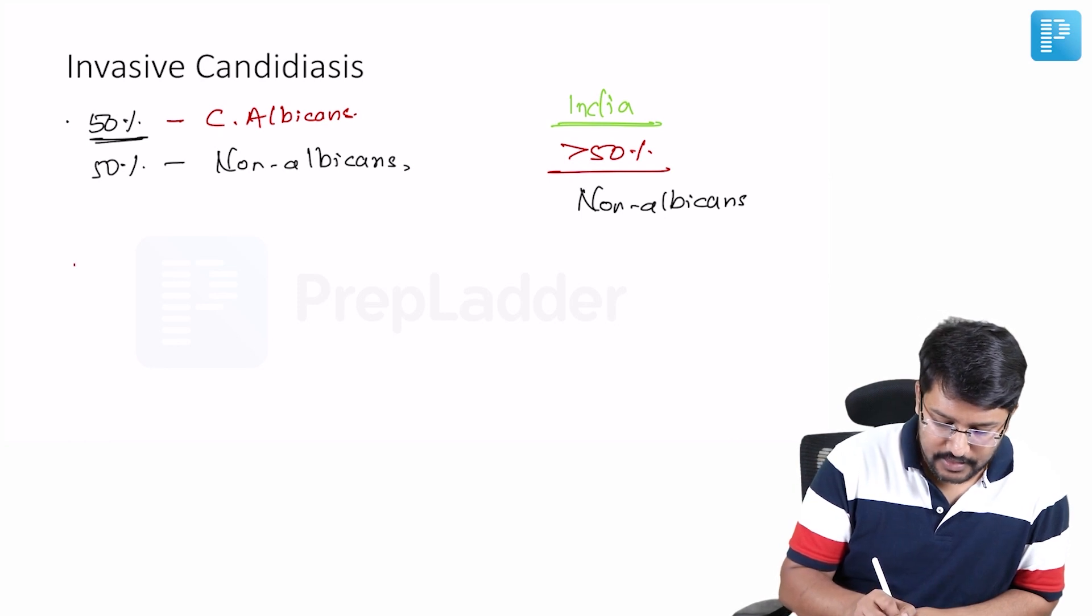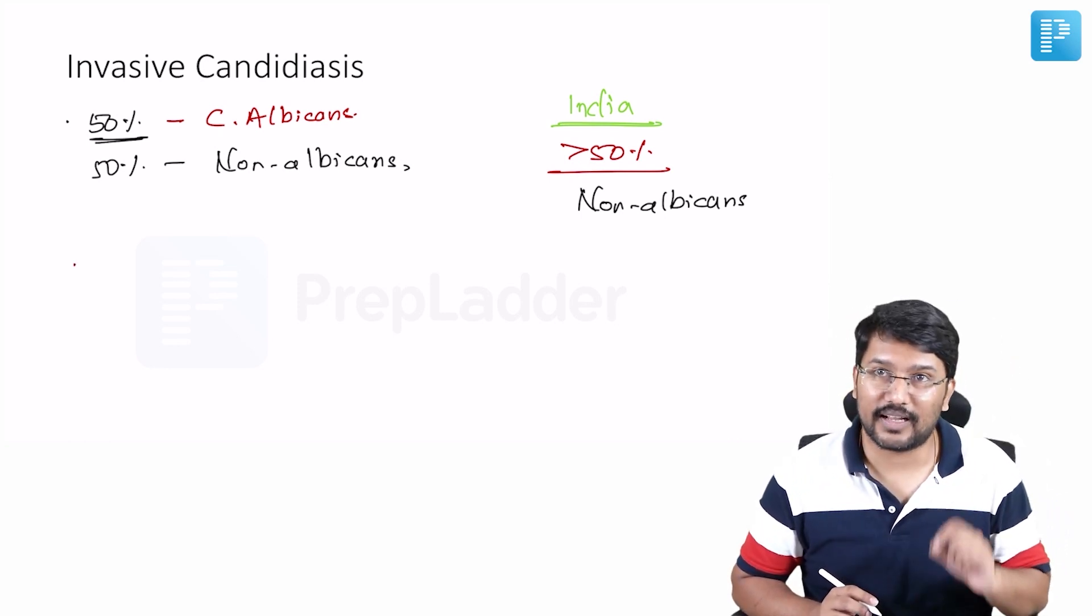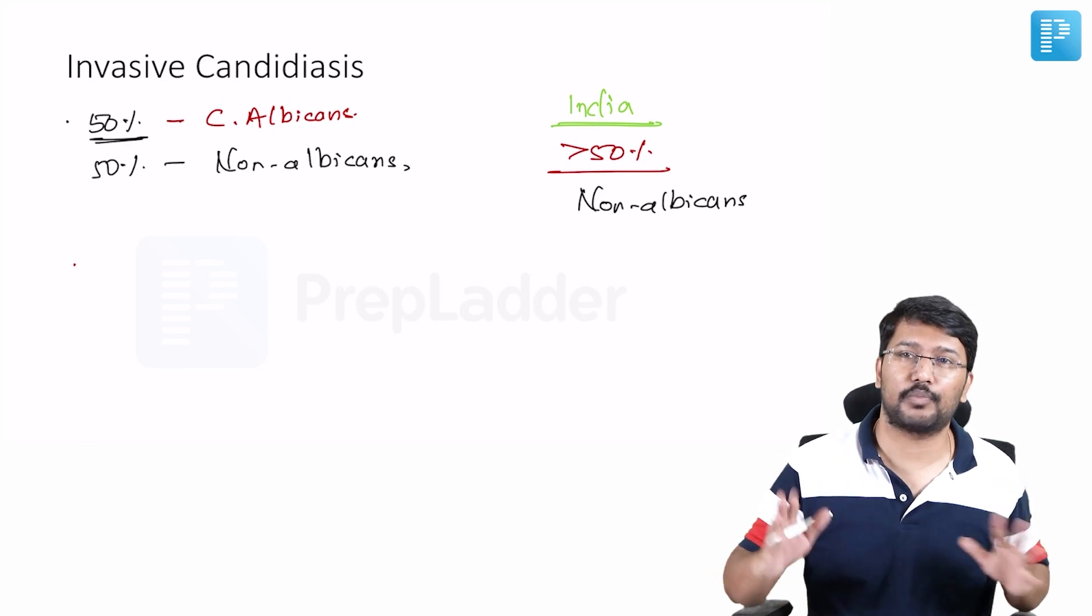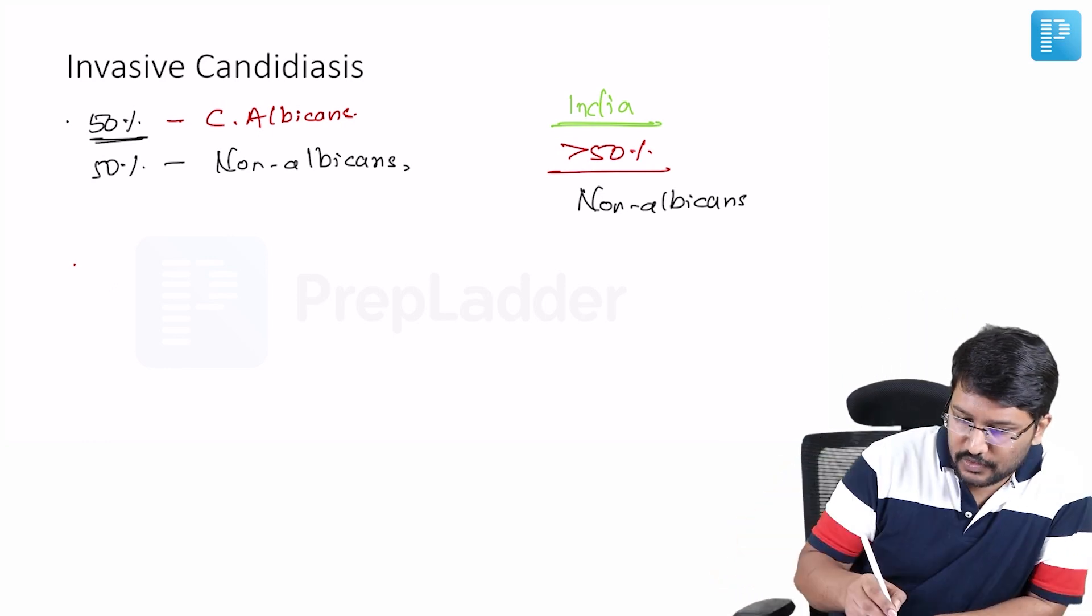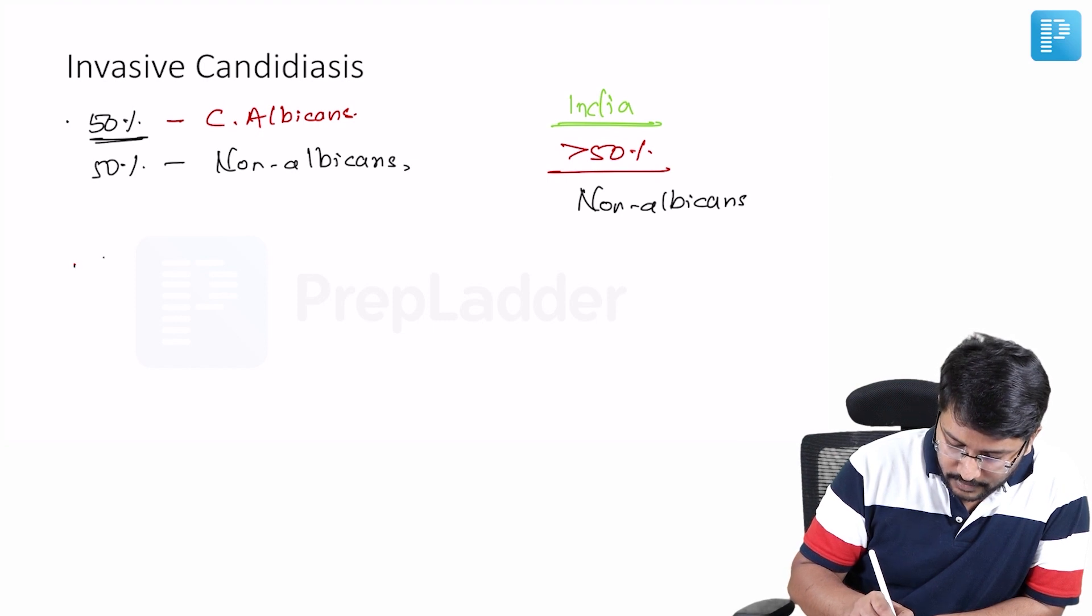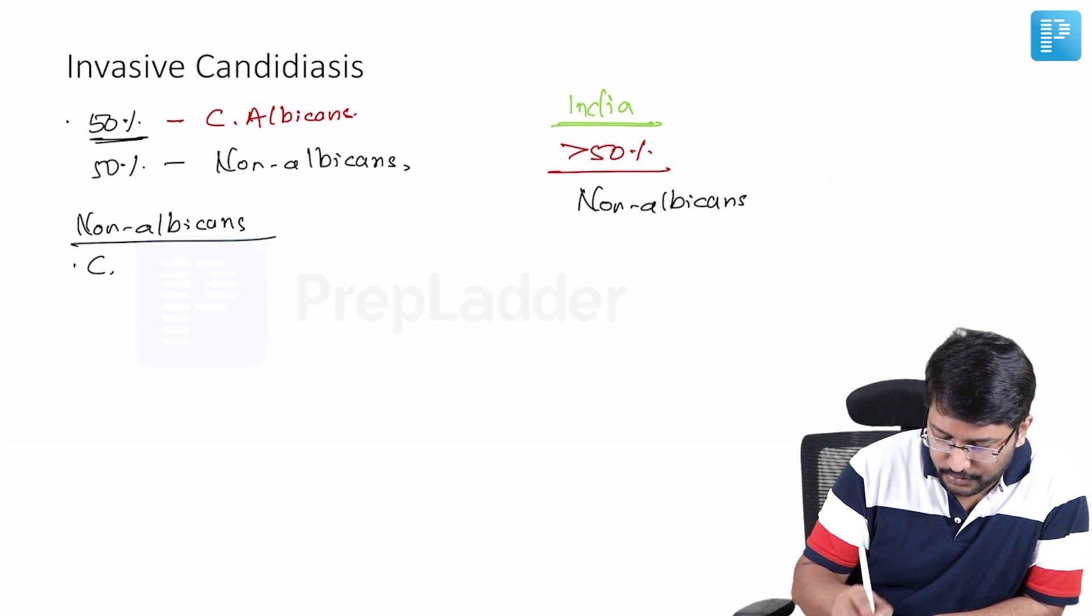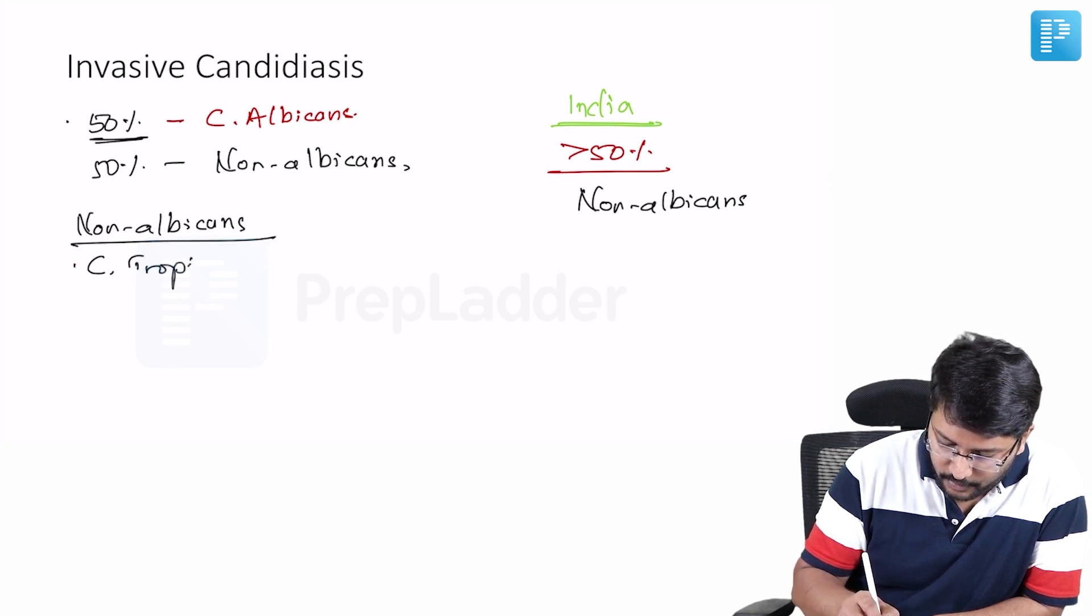Now the second point I want you to remember is about those important non-albicans species. The four species I want you to specifically remember because these account for more than 80% of all the isolates. What are these four species? One, Candida tropicalis. Candida tropicalis is the first one. I want you to remember tropicalis. The second one is Candida glabrata.